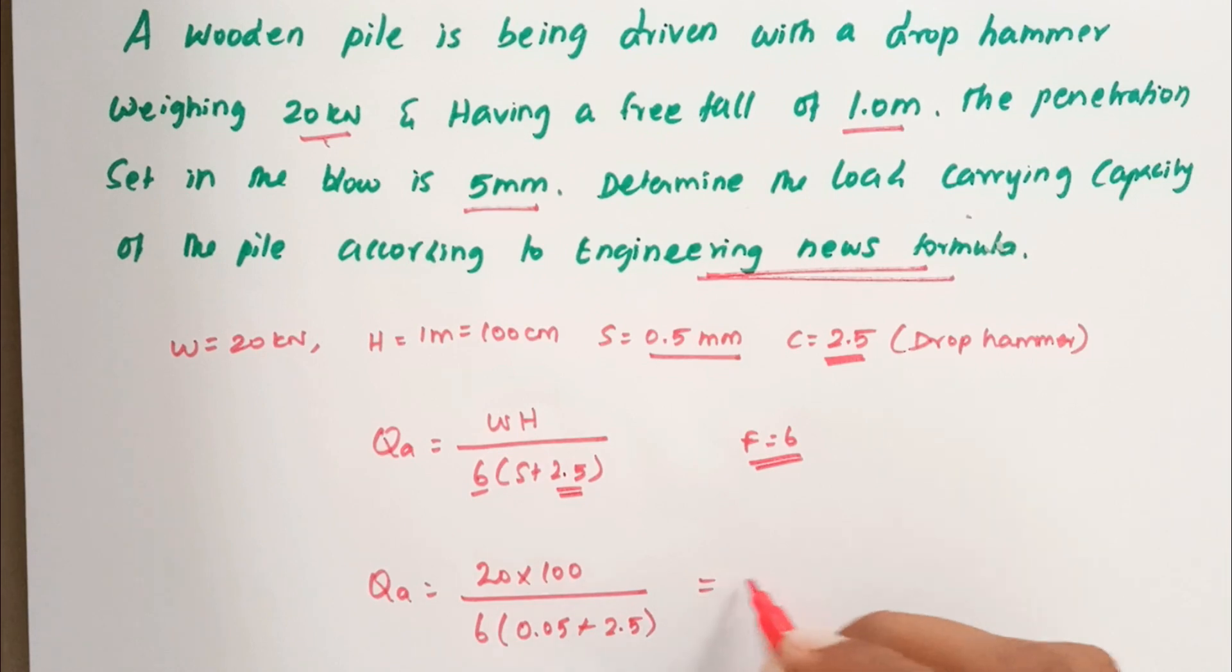Solving this, we get the value of 111.1 kilonewtons. This is the load carrying capacity. This is the method we can solve the engineering news formula. We'll see you in the next video. Thank you.